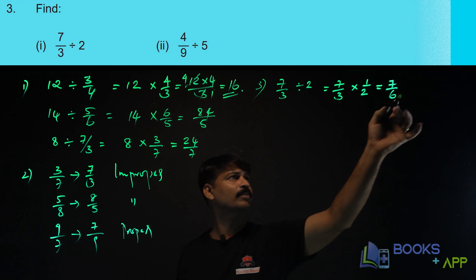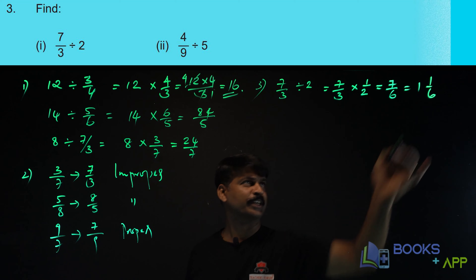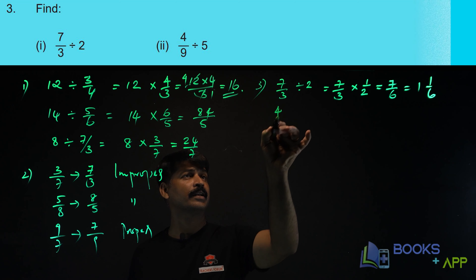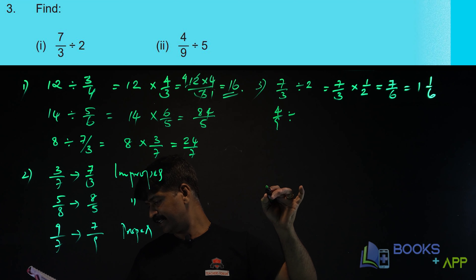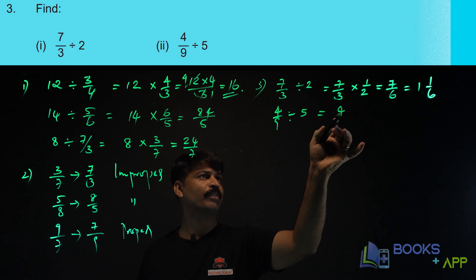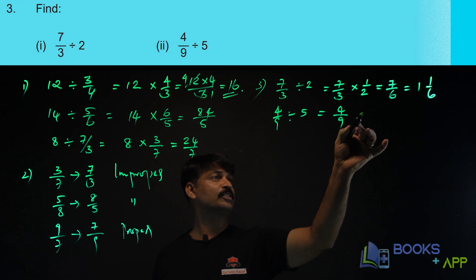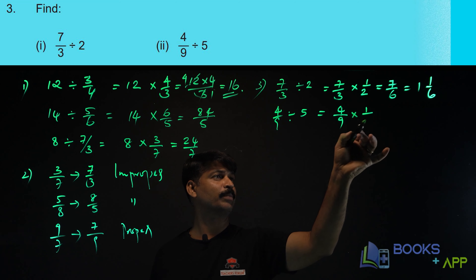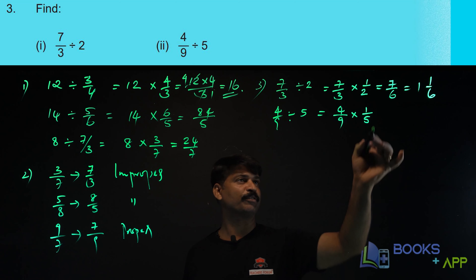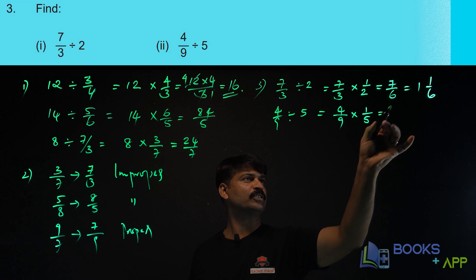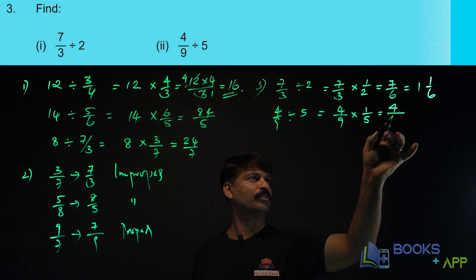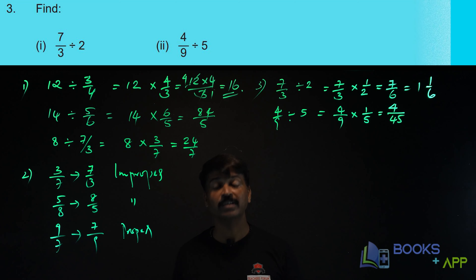You will be getting 1 and 1 by 6. Now the next question: 4 by 9 divided by 5. By taking the reciprocal of 5, which is 1 by 5, you can multiply. So it becomes 4 by 9 into 1 by 5. That is equal to 4 into 1 over 9 into 5, which gives 4 by 45.